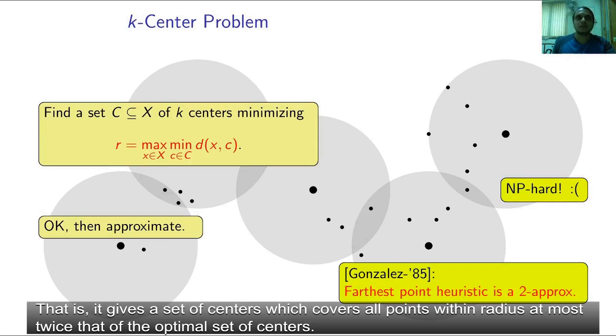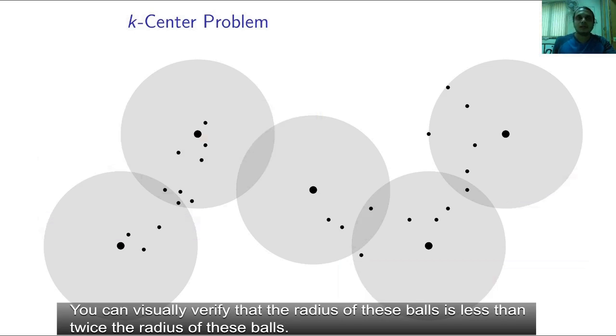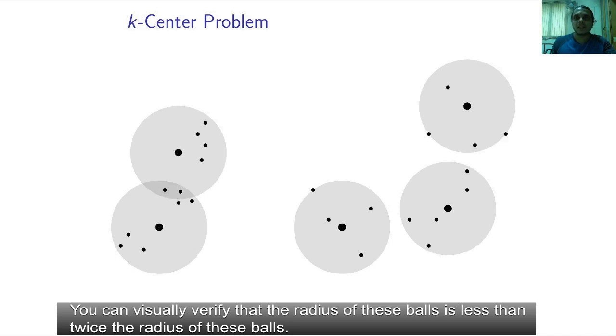That is, it gives a set of centers which covers all points within the radius at most twice that of the optimal set of centers. You can visually verify that the radius of these balls is less than twice the radius of these balls.